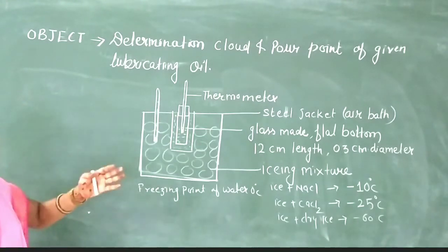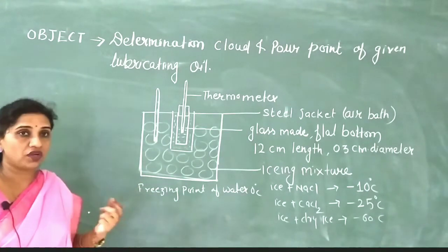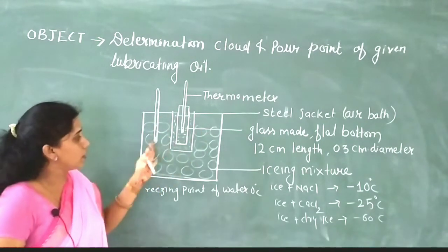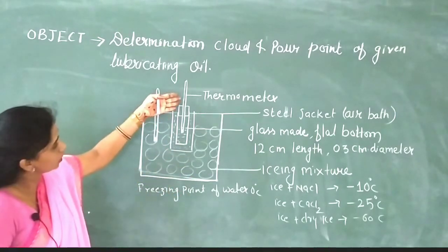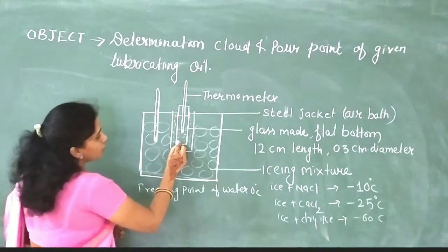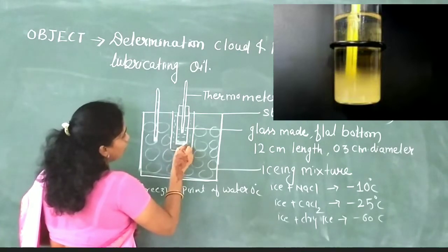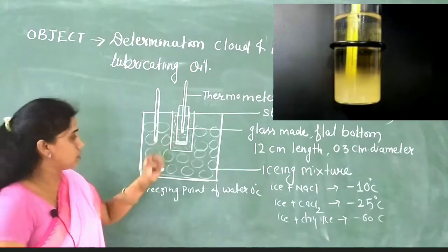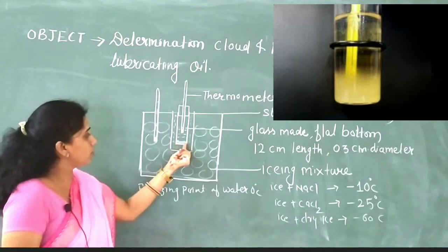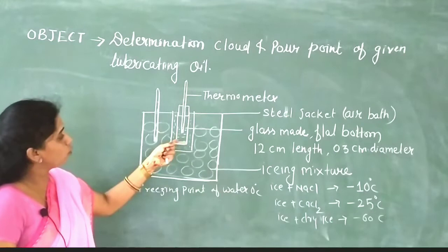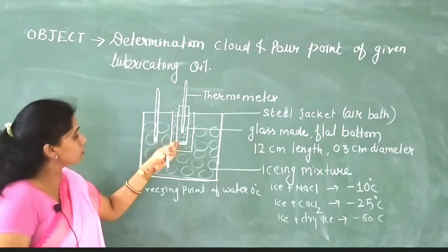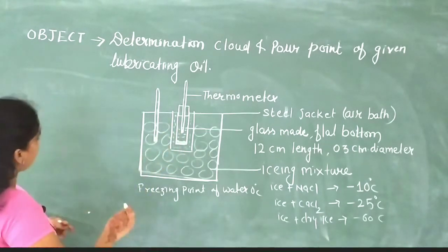A teacher can ask how to observe the cloud point. When oil is filled in the test jar and comes in contact with the icing mixture, the temperature decreases progressively. The point at which we see a cloudy and hazy appearance at the bottom of the jar is the cloud point. The temperature at which this cloudy and hazy appearance is observed is recorded using the thermometer.